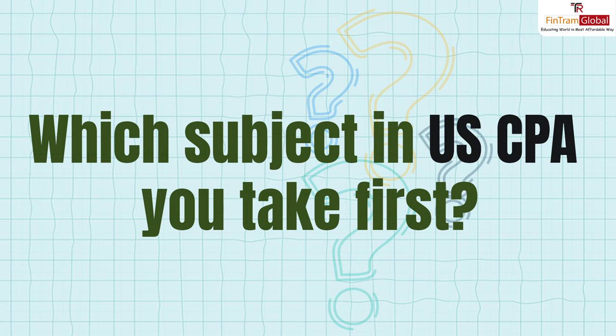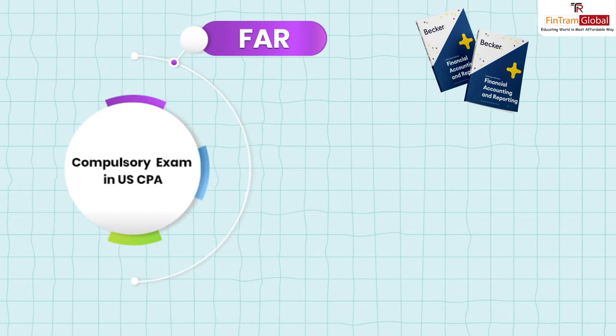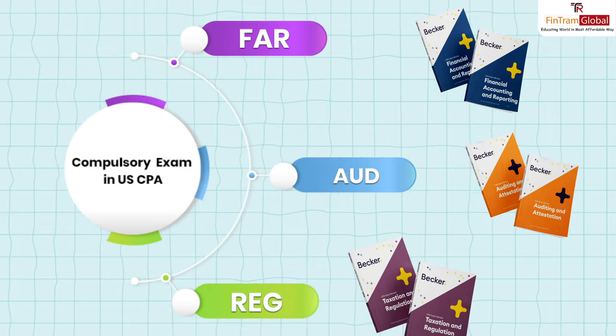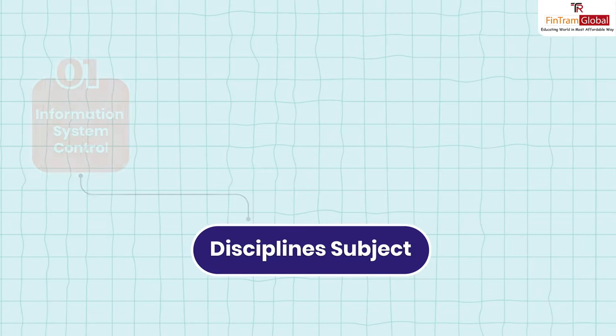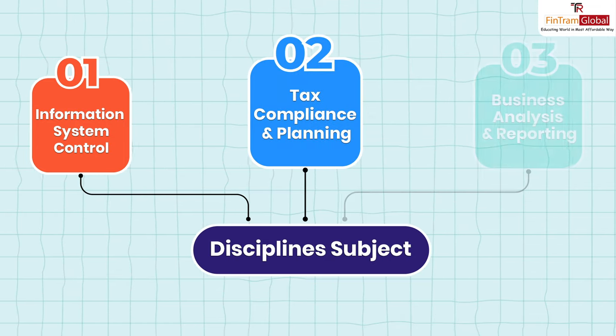Coming to what we needed to discuss: which CPA subject to be taken first. Let me give you a bird's eye view of what subjects you have in CPA. You have three core subjects now from 2024 onwards — Financial Accounting and Reporting, we call it FAR; Audit and Attestation, we call it AUD; and Regulation, which is like taxation. These are mandatory. Then you have three discipline subjects: ISC — Information Systems and Control; TCP — Tax Compliance and Planning; and BAR — Business Analysis and Reporting.